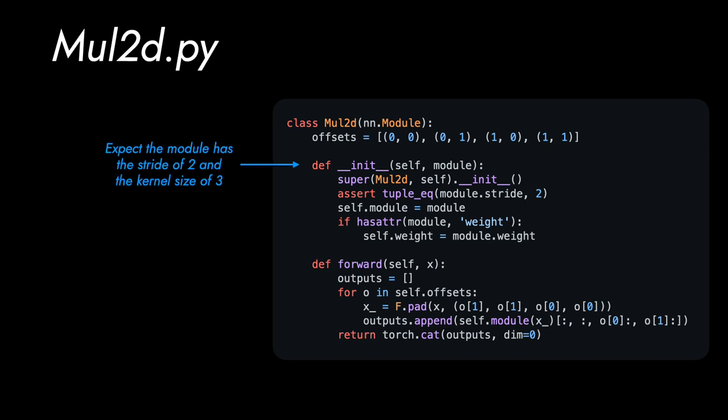For this example, we expect the injected module has the stride of 2 and the kernel size of 3.